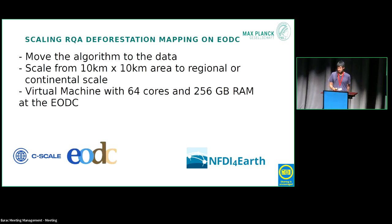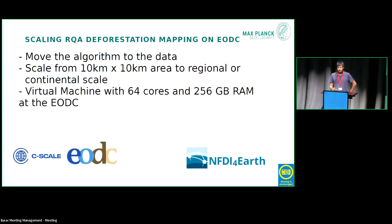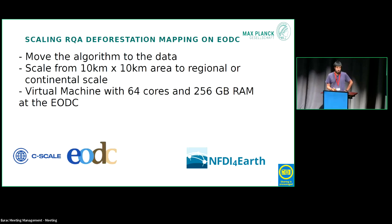This is a study where we are scaling up an algorithm that we tested on a very local scale, and we wanted to test how to scale up to regional and continental scales. For that, we moved the algorithm to the data by using a virtual machine with 64 cores and 256 gigabytes of RAM at the EODC in Vienna. This was part of a C-Scale project study, and I'm also funded by the NFDI for Earth Sciences — the German Research Data Infrastructure for the Earth Sciences.